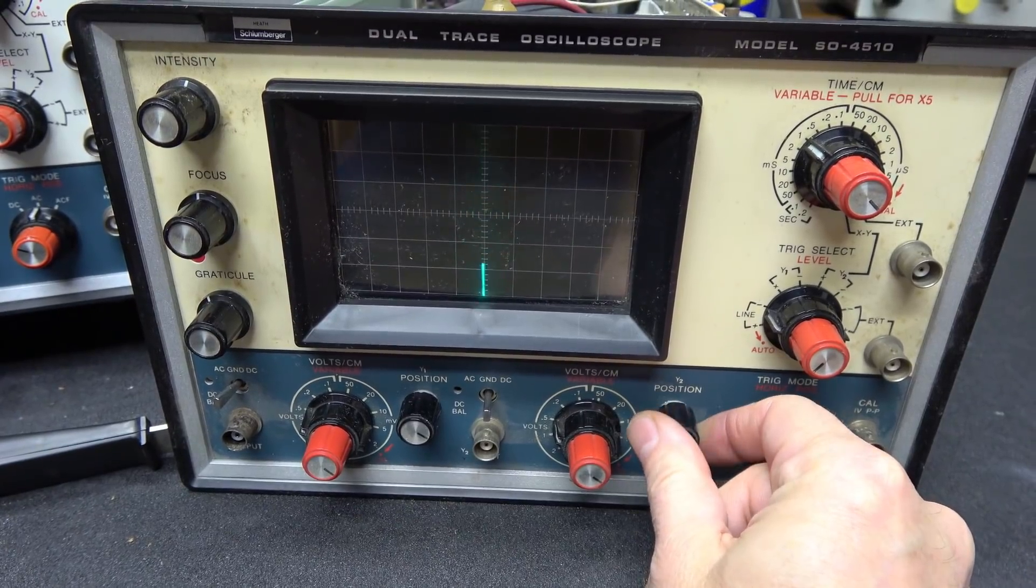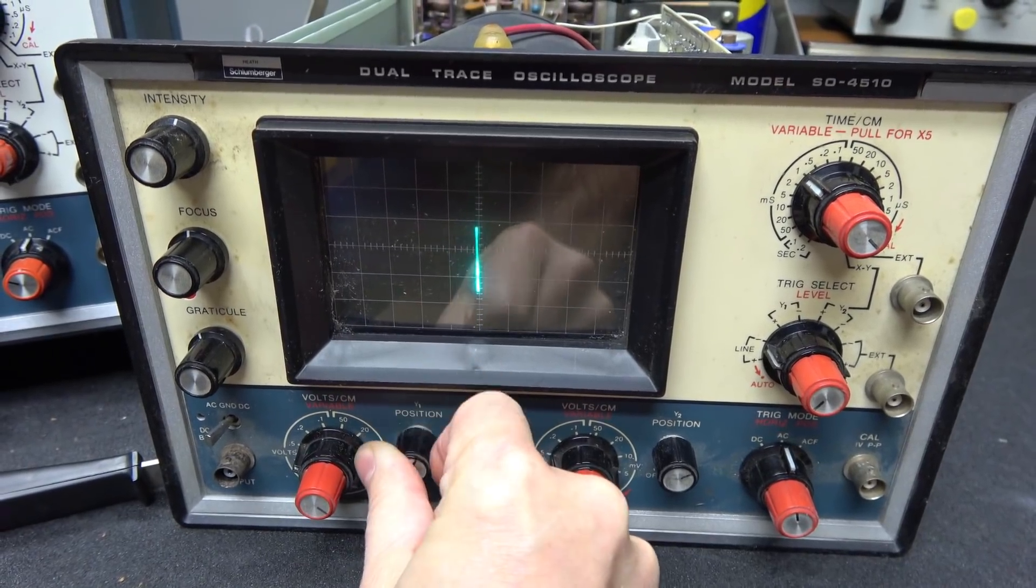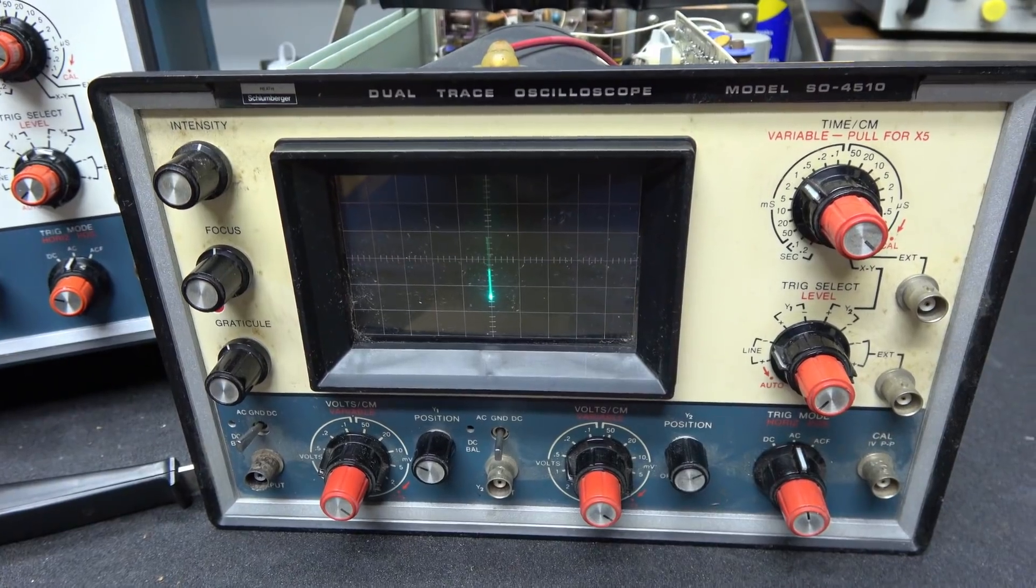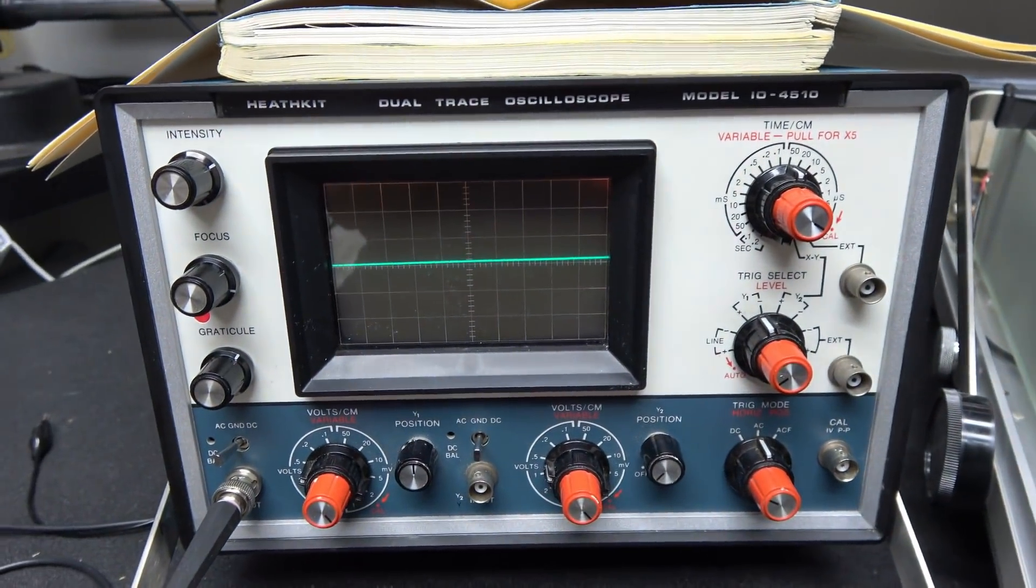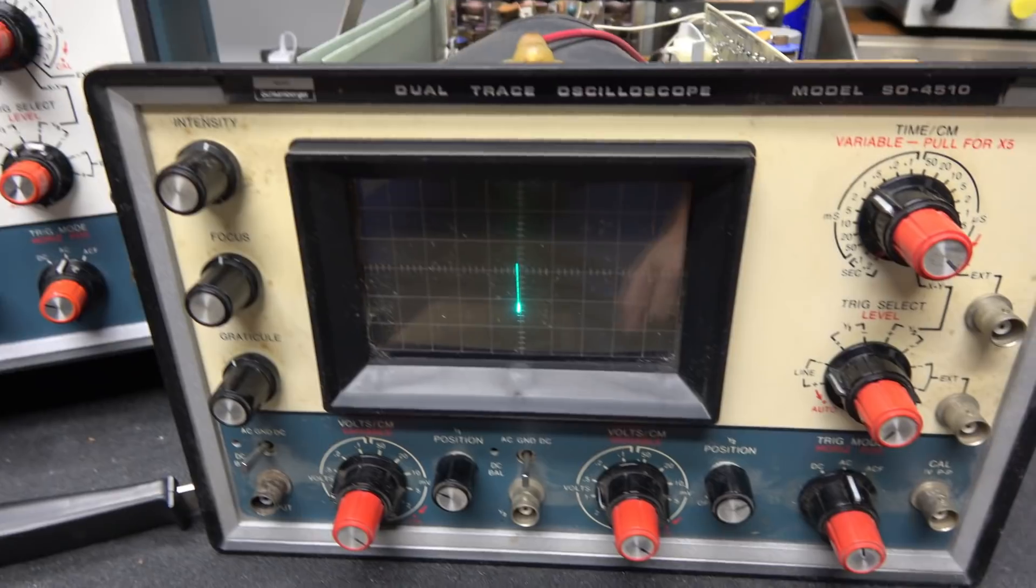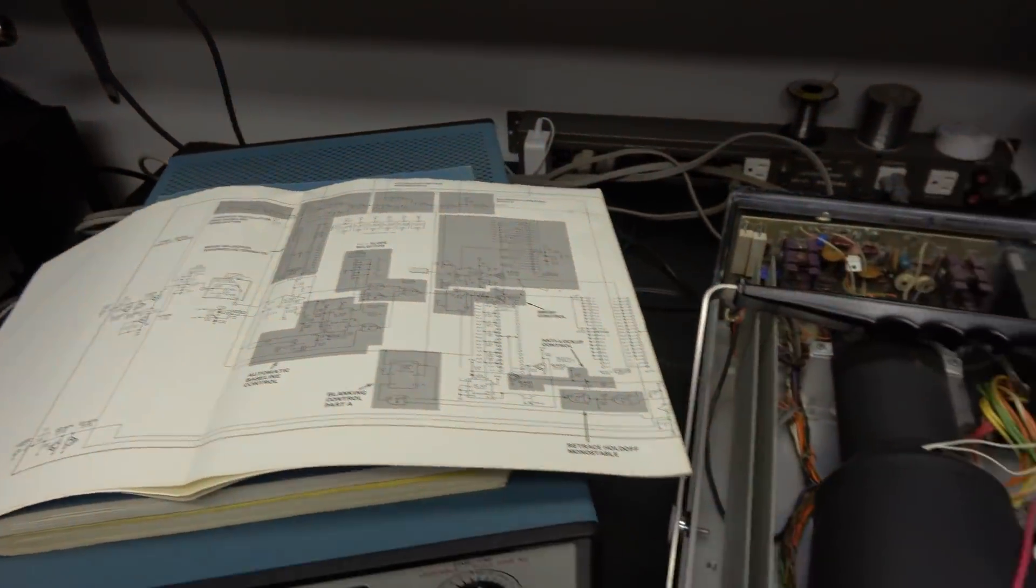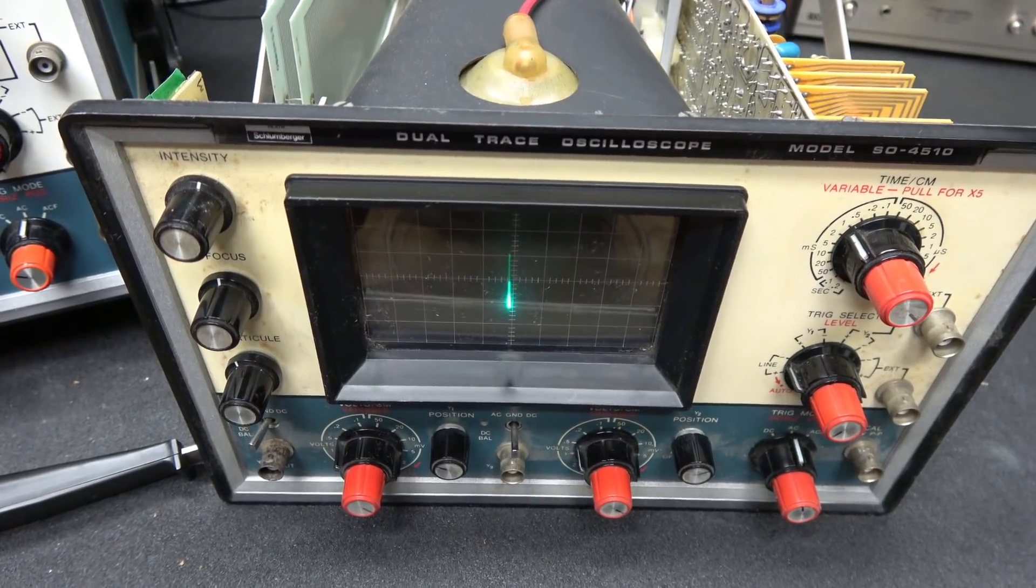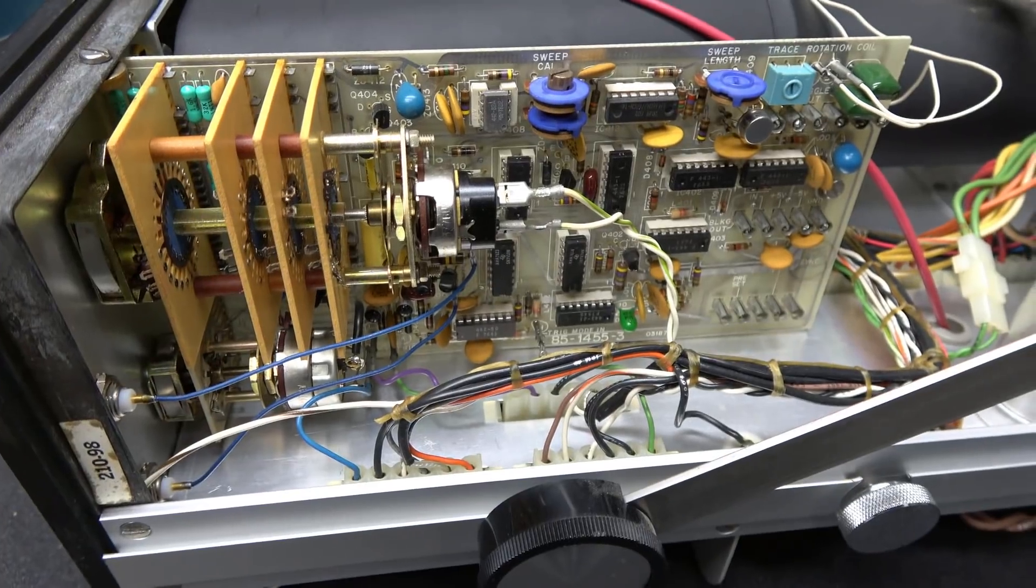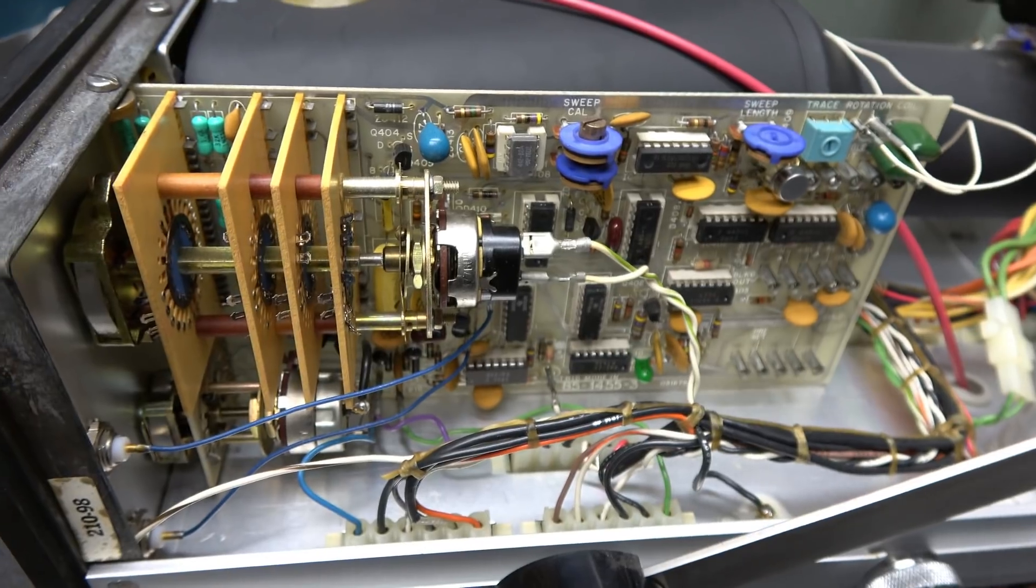But I found if I change the time on horizontal sweep, it affects this vertical movement. And if I move Y2 position, you can see it moving. However, Y1 does nothing. So what I suspect is we have a problem on the horizontal sweep board. What we're gonna do is take this scope and use that to troubleshoot this scope. Luckily, I have Heathkit schematics and service manuals.